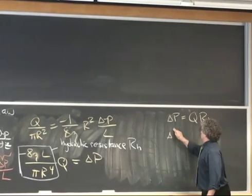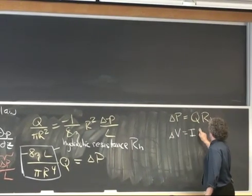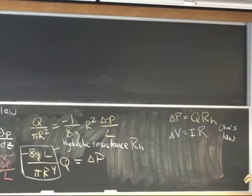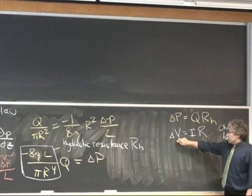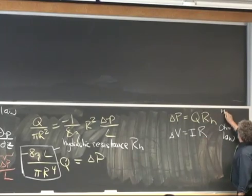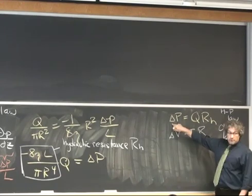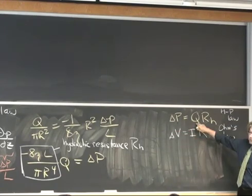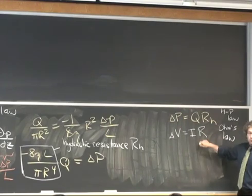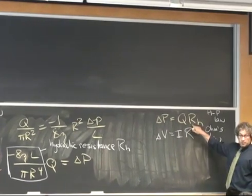This equation should be reminiscent of Ohm's law. Ohm's law says the voltage drop across a resistor equals current multiplied by resistance. The Hagen-Poiseuille law says the pressure drop across the channel is proportional to the volumetric flux multiplied by the hydraulic resistance. Because these equations have the same form, everything you've been taught to do with an electrical circuit you can do with a hydraulic circuit.